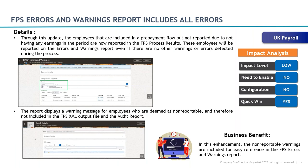Another UK payroll feature is the enhanced FPS Errors and Warnings Report. Earlier, if an employee had no payroll or payment for a month, they were excluded from FPS results. Now, all employees excluded due to such omissions will also be reported as a warning in the FPS warning report. This makes it much easier for payroll managers to track which employees are not reported to FPS and understand the reason — they simply have no payments for that period.